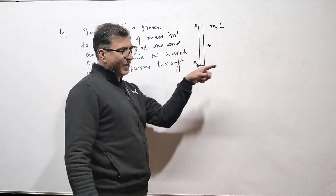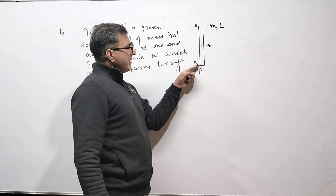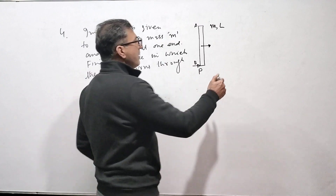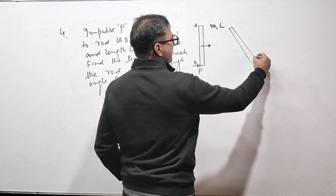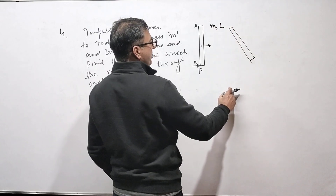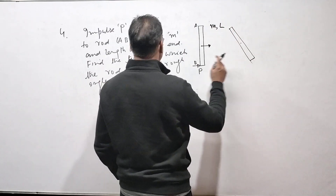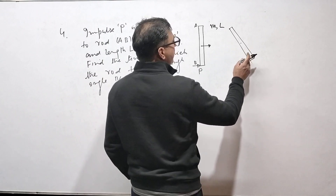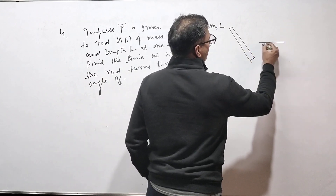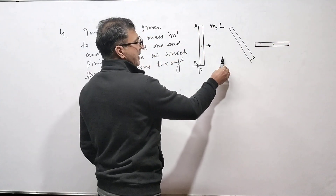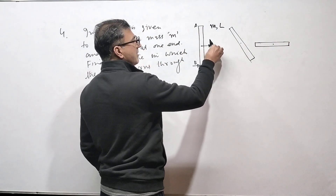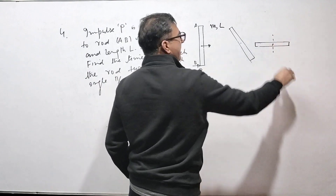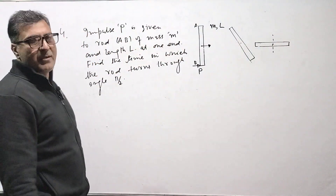You are pushing the rod at one end with impulse P. The rod rotates and moves. We need to find the time in which the rod turns through an angle of π/2 — that is, 90 degrees. The rod starts horizontal, rotates, and we must find how long it takes to complete a quarter turn.